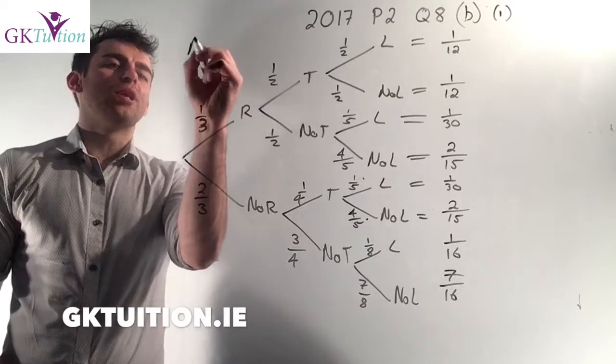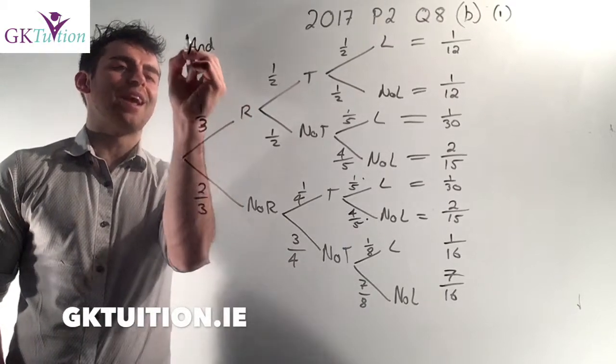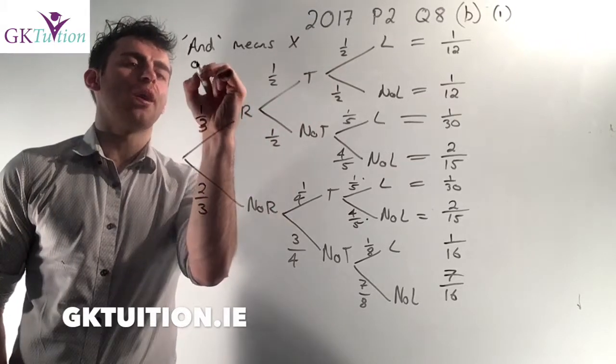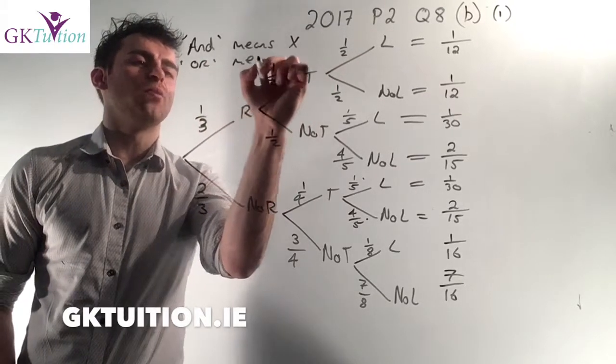Now in order to work out these values here, the thing that you need to be really clear on in probability is that AND means multiply. In probability, AND means that you multiply and OR means that you add.